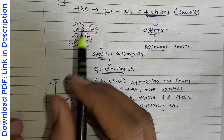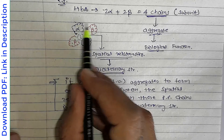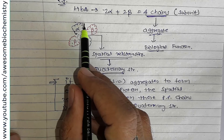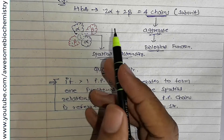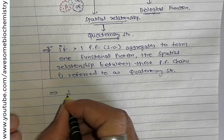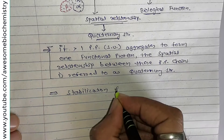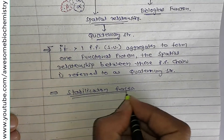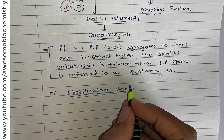Since the chains act as one unit with a spatial relationship, there must be certain stabilization forces in this protein. What are the stabilization forces for quaternary structure?